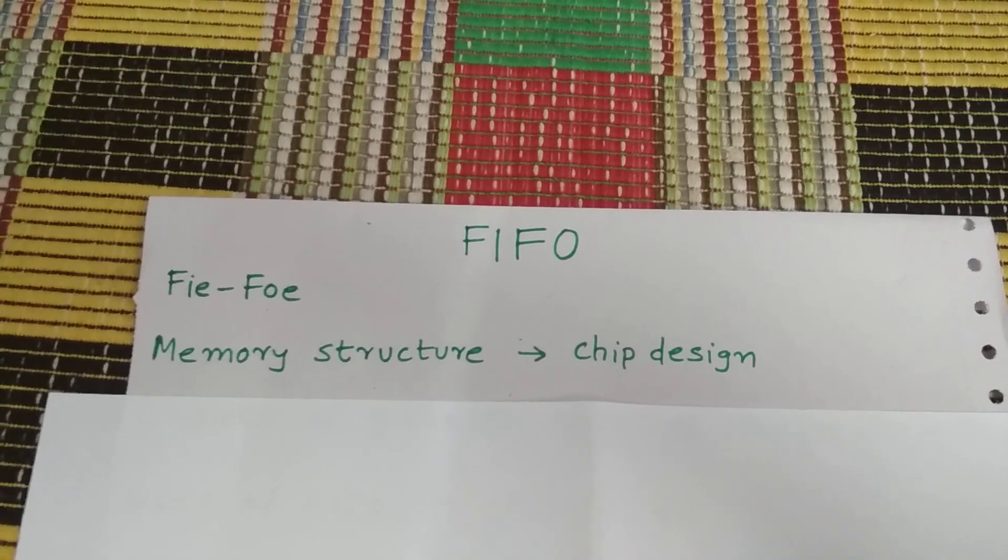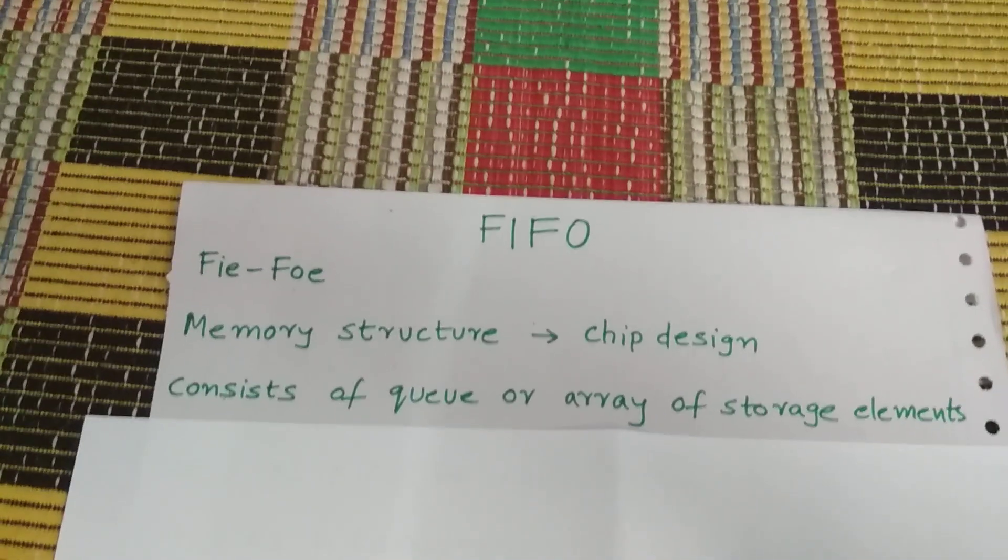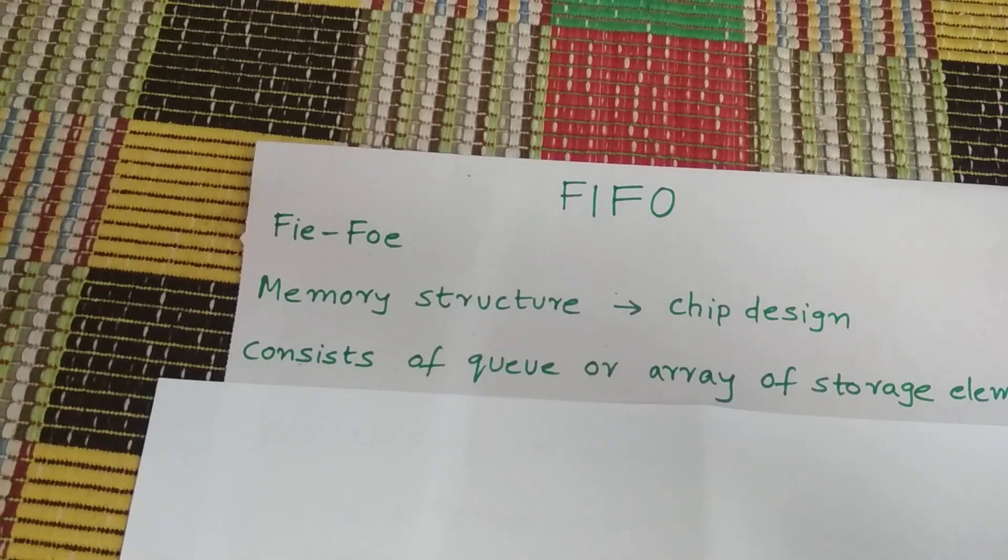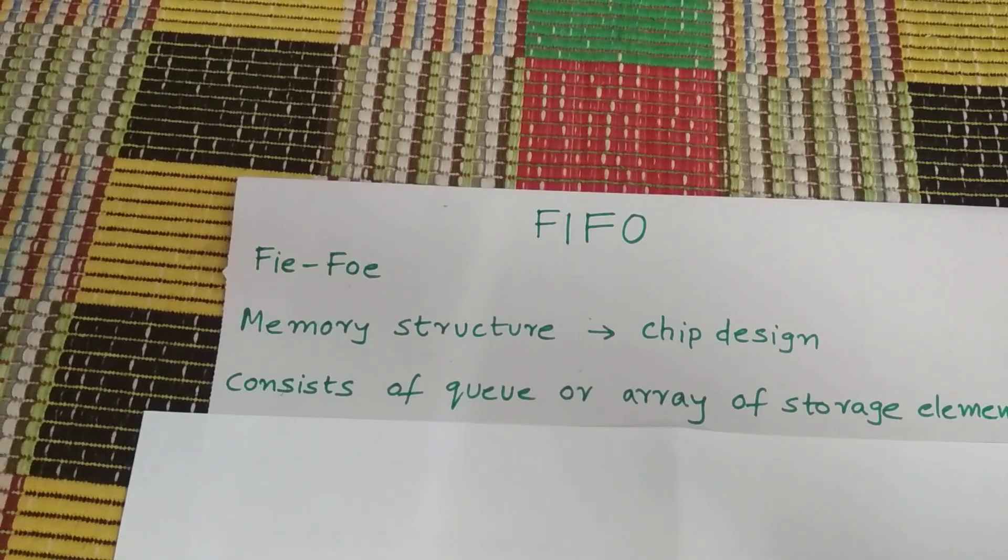What does FIFO consist of? FIFO consists of a queue or an array of storage elements where data is written to or read from.